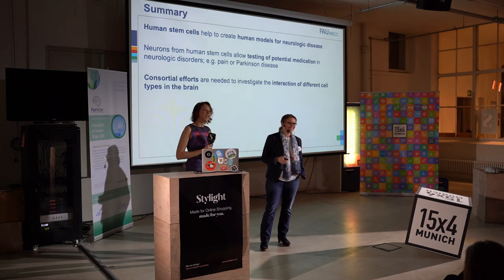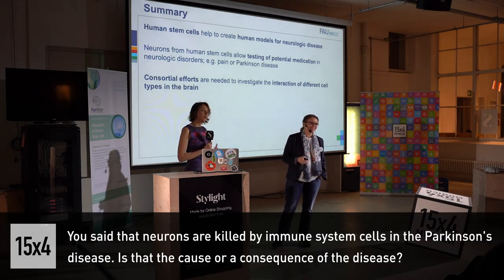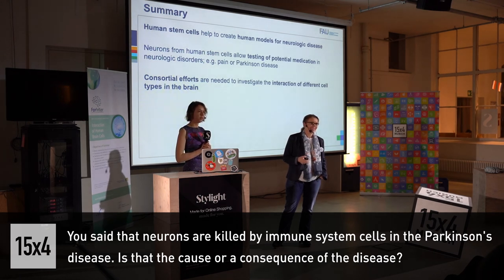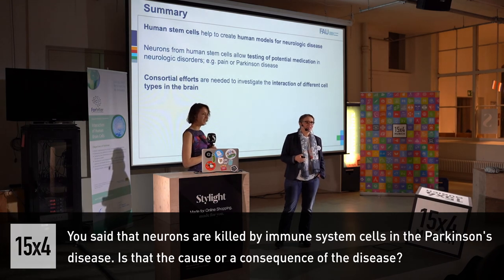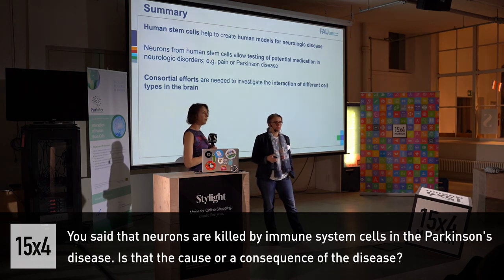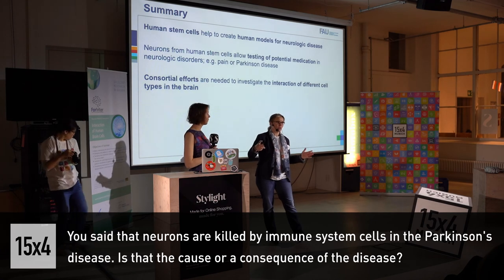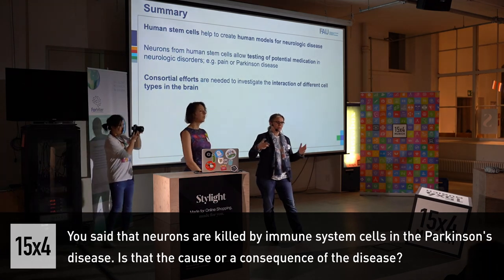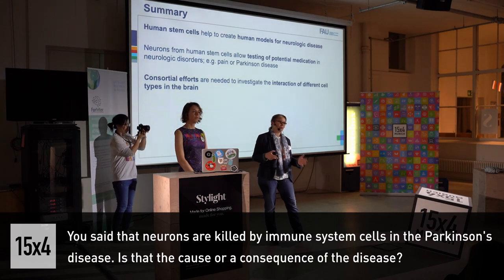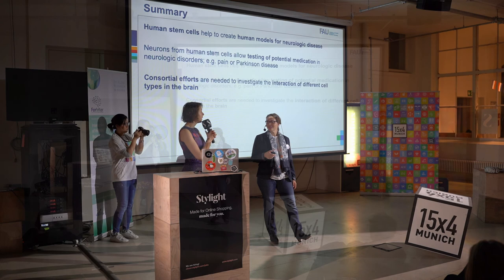Question from the audience: Is the fact that neurons are killed by immune system cells in Parkinson's disease the cause of the disease, or a consequence — or is it unknown? Answer: I would say it's an important modifier. We are trying to find out whether it's a cause by studying a larger group, but at the moment we are confident enough to say it's an important modifier of the disease.